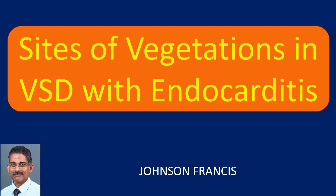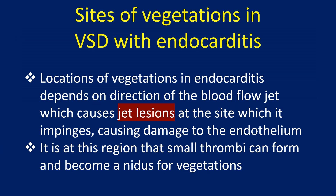What are the sites of vegetation in ventricular septal defect with endocarditis? The location of vegetation in endocarditis depends on the direction of the blood flow jet, which causes jet lesions at the site where it impinges, causing damage to the endothelium. It is at this region that small thrombi can form and become a nidus for vegetation.